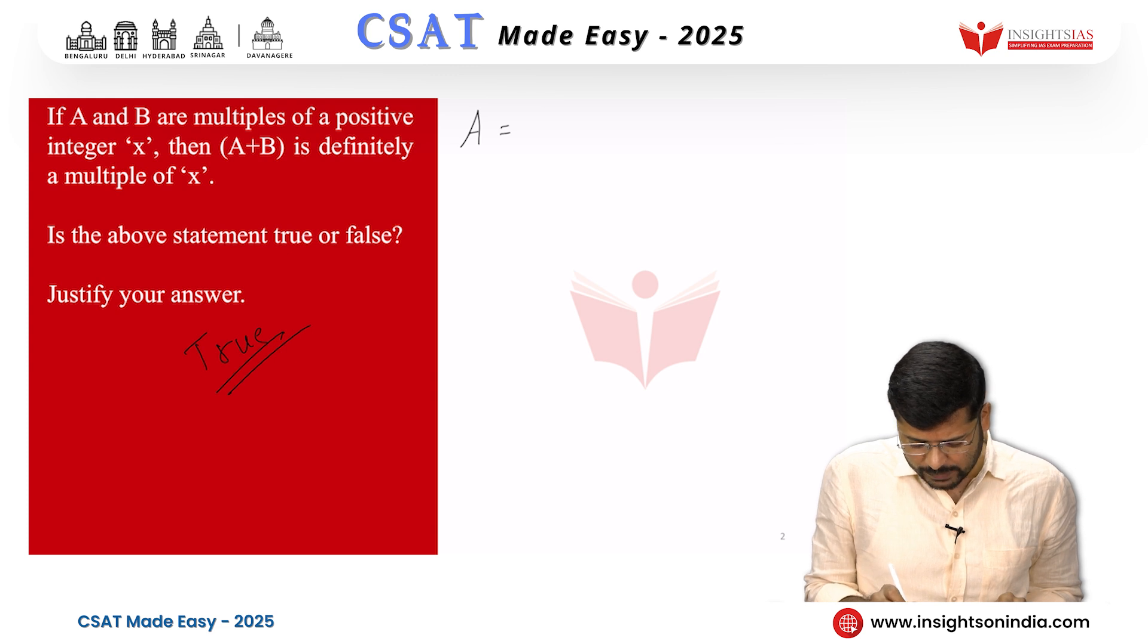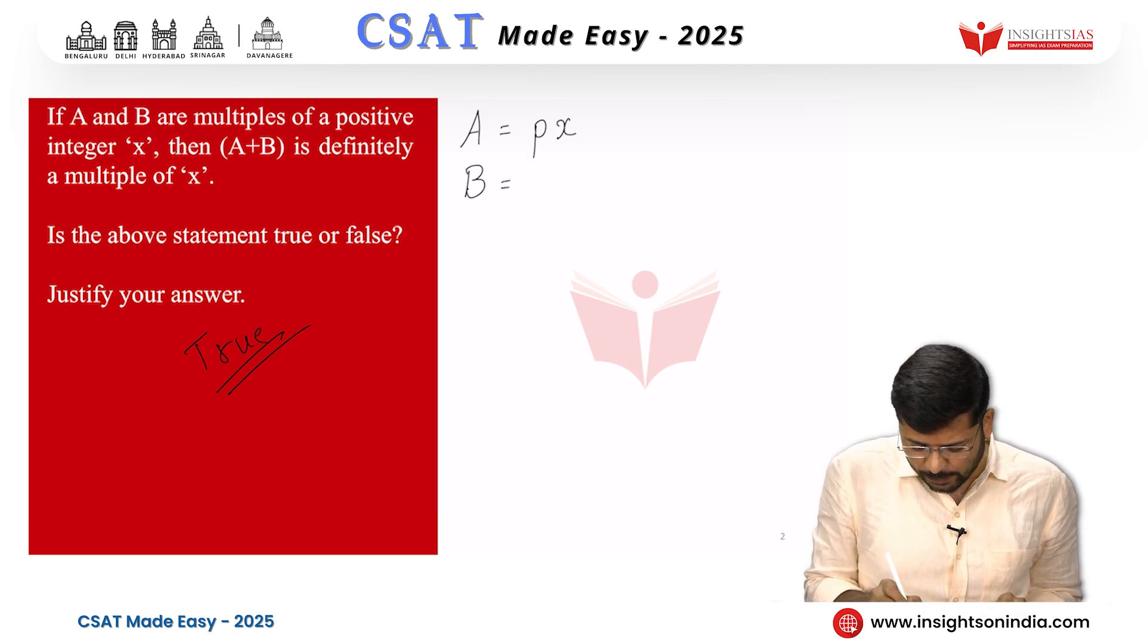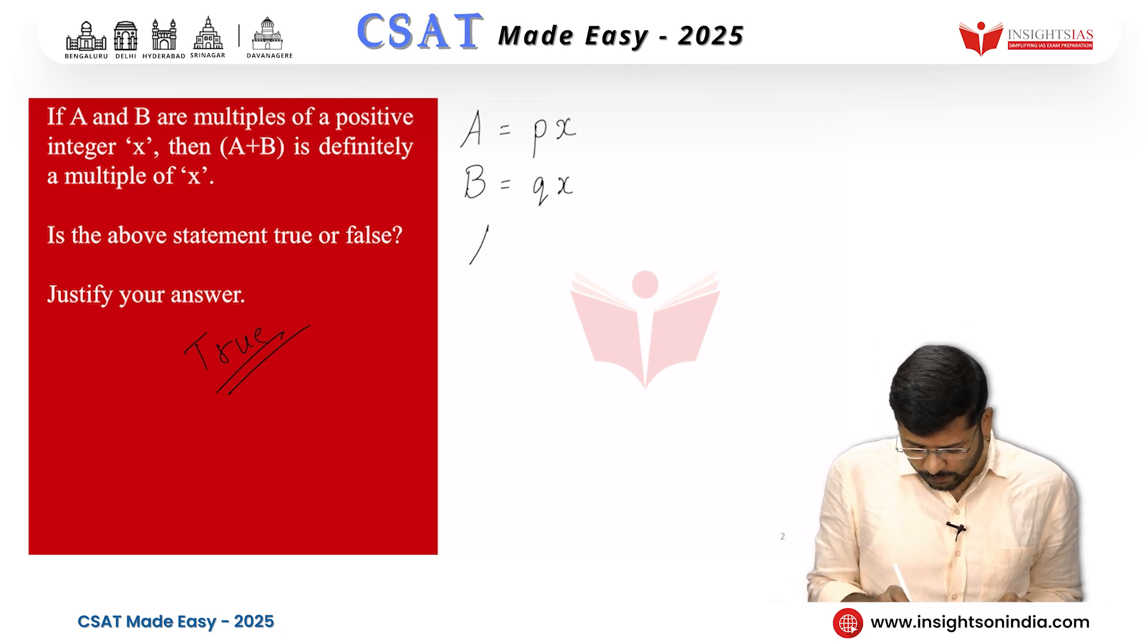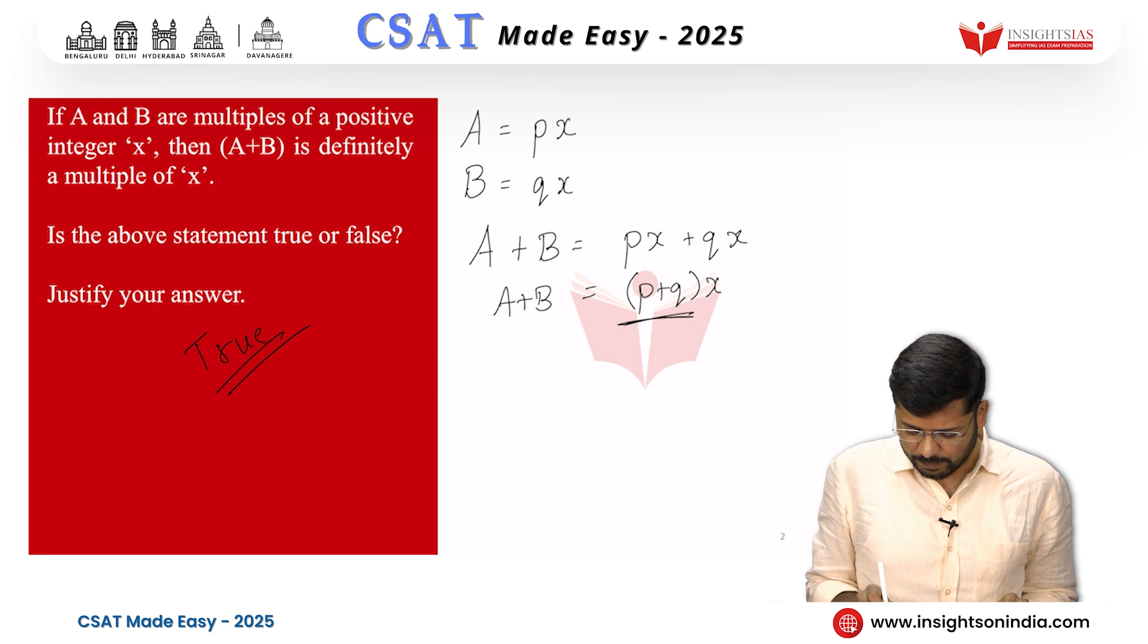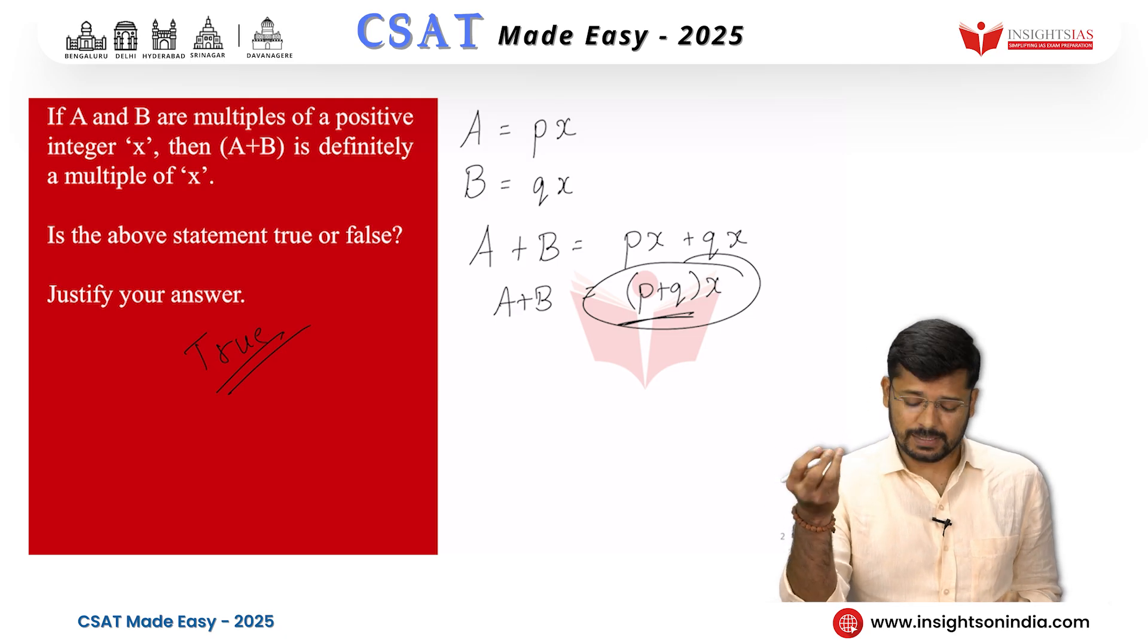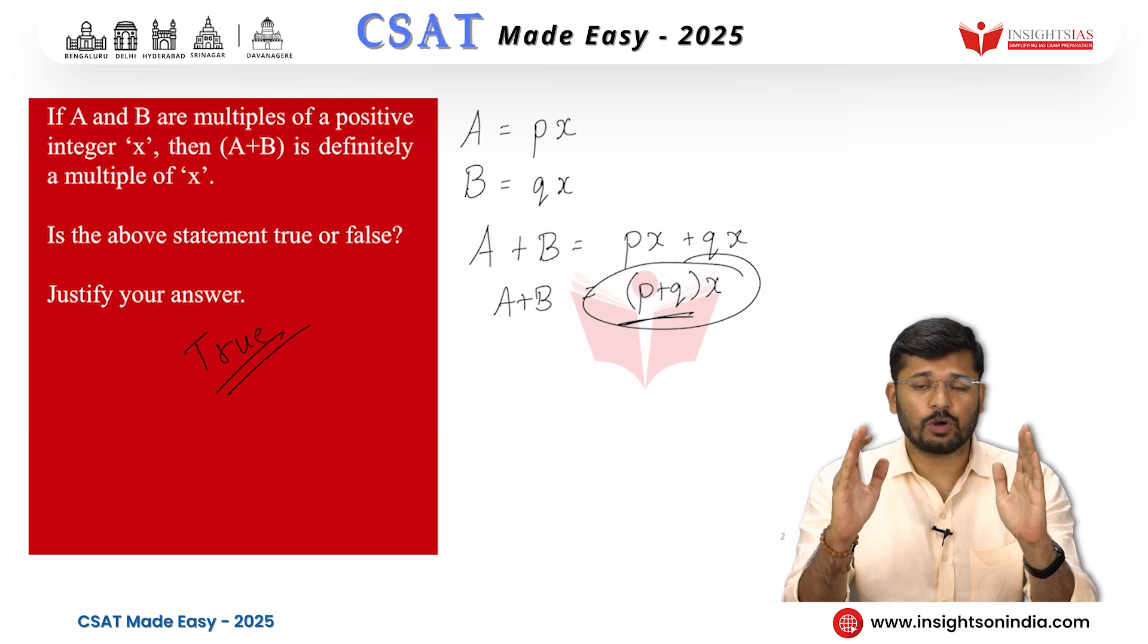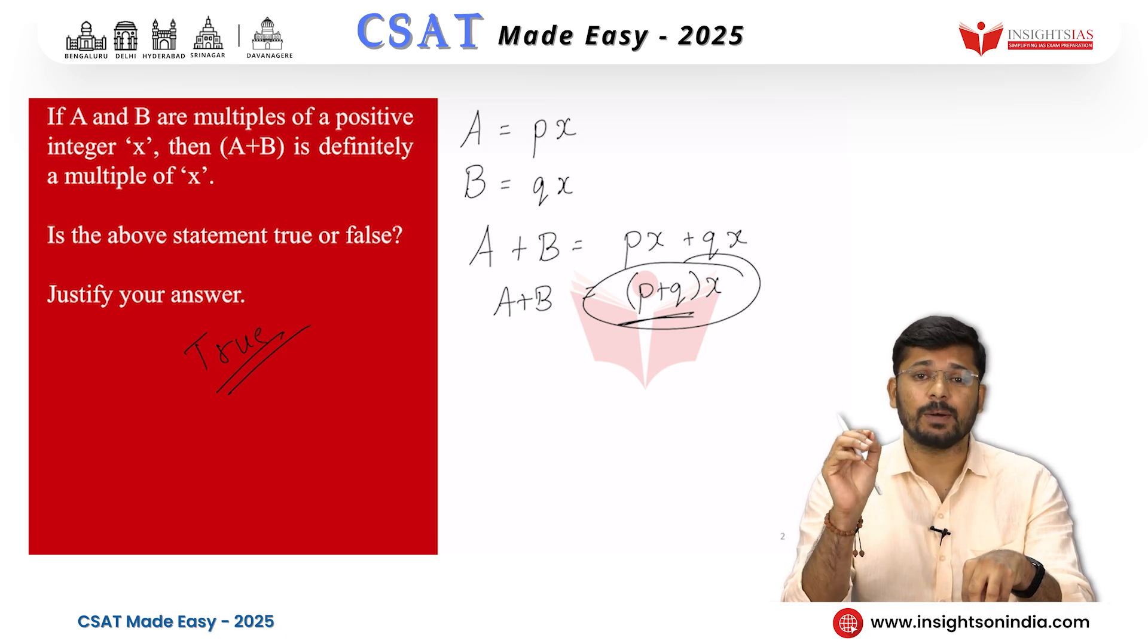Let a be a multiple of x. If it is a multiple of x we can consider it to be p into x where p is an integer and b let it be q into x where q is an integer. If you add a and b that would be p into x plus q into x. We can take x common, so it would be p plus q into x. Therefore a plus b is equal to p plus q into x, which is a multiple of x. Therefore a plus b has to be a multiple of x. Through this problem we understood a basic concept that if a and b are multiples of a positive integer x then a plus b must definitely be a multiple of x also.